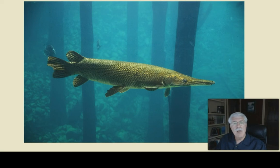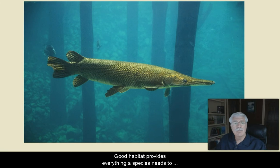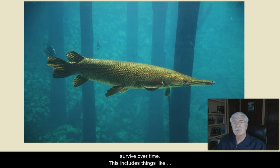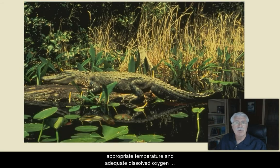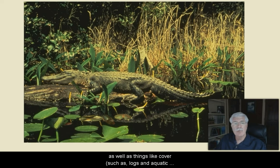Good habitat provides everything a species needs for some of the time. This includes things like appropriate temperature and adequate dissolved oxygen, as well as things like cover, such as logs and aquatic vegetation, or a particular bottom substrate, for example.